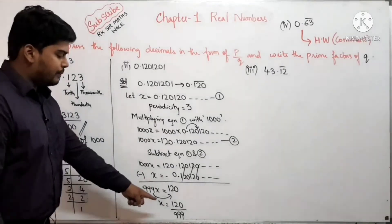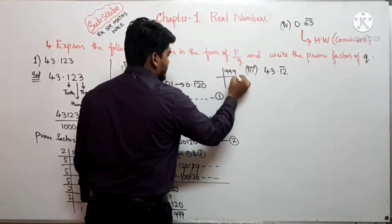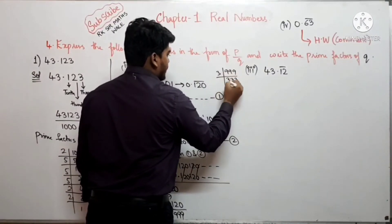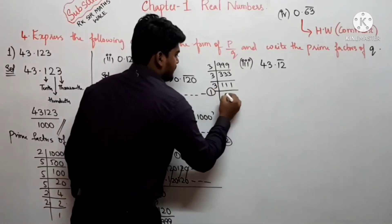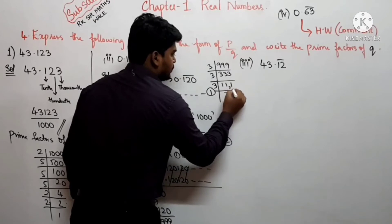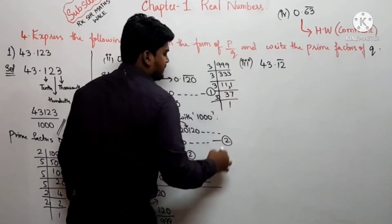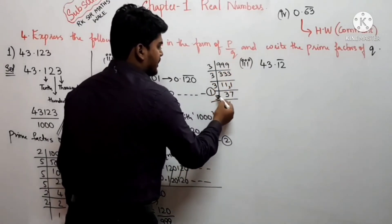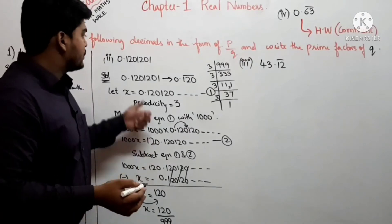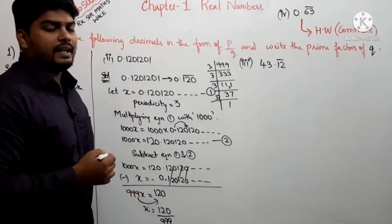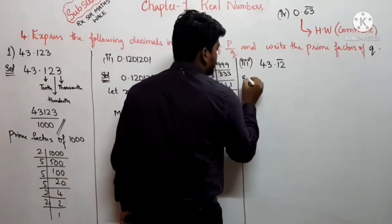अब denominator 999 के prime factors निकालते हैं। 999 = 3 × 3 × 3 × 37। यह 2ⁿ × 5ᵐ के form में नहीं है, इसलिए this is a non-terminating decimal। आईए अब 3rd part करते हैं।